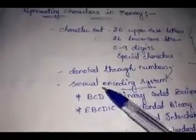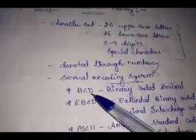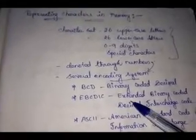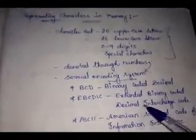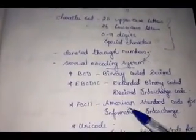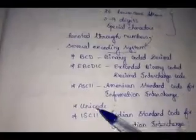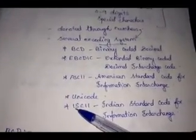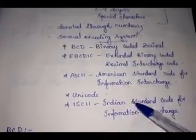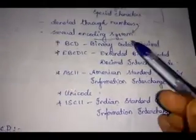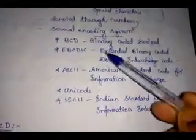There are several encoding systems. They are: BCD (Binary Coded Decimal), EBCDIC (Extended Binary Coded Decimal Interchange Code), ASCII (American Standard Code for Information Interchange), Unicode, and ISCII (Indian Standard Code for Information Interchange). Now we will see about each of these encoding systems.